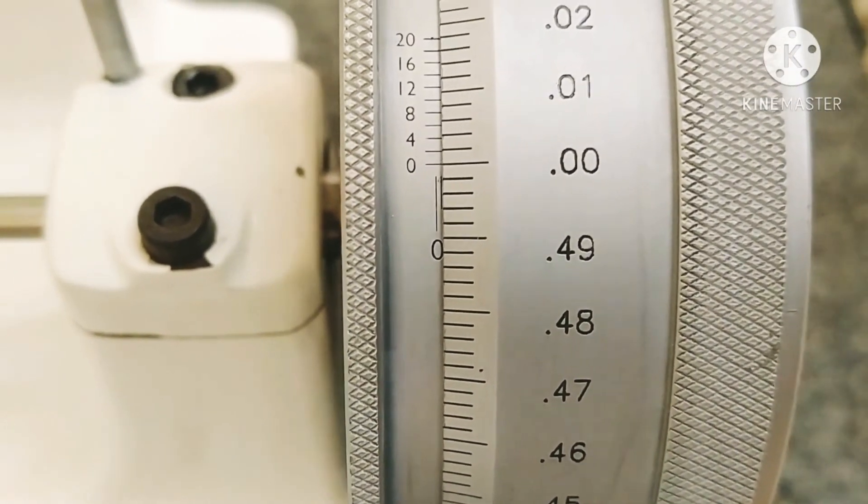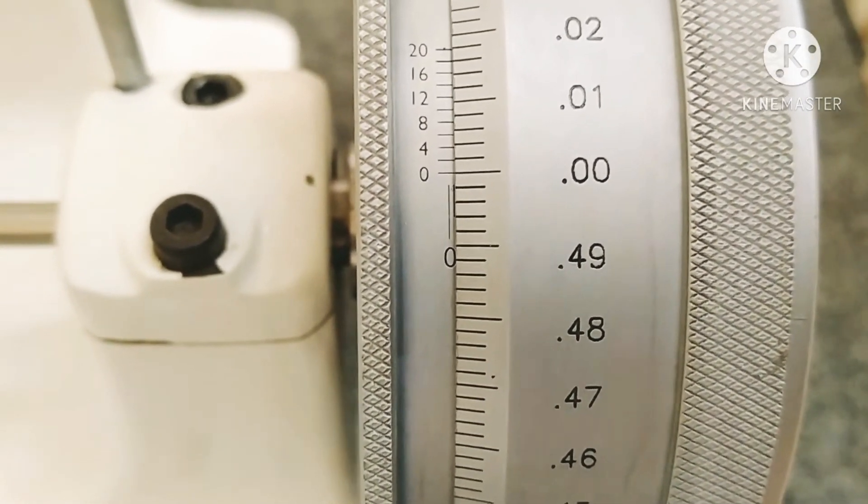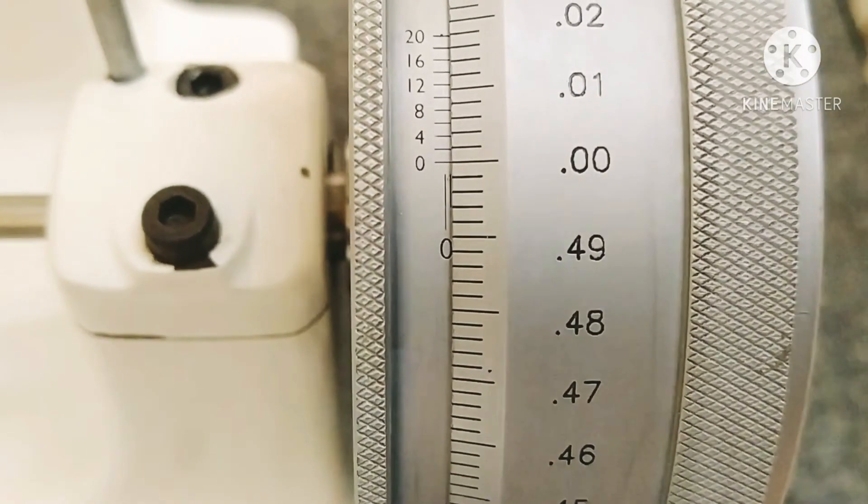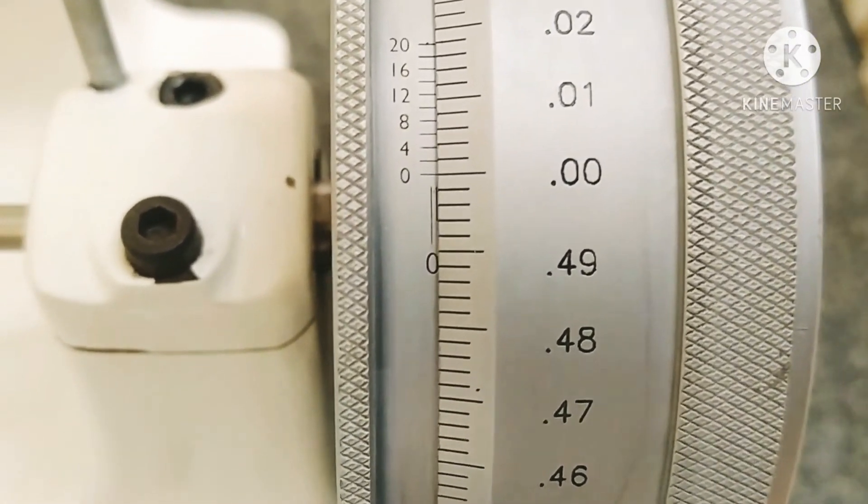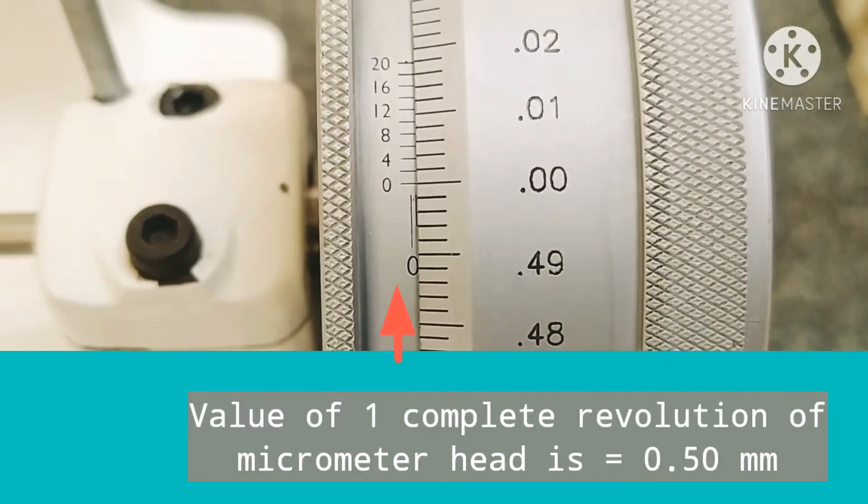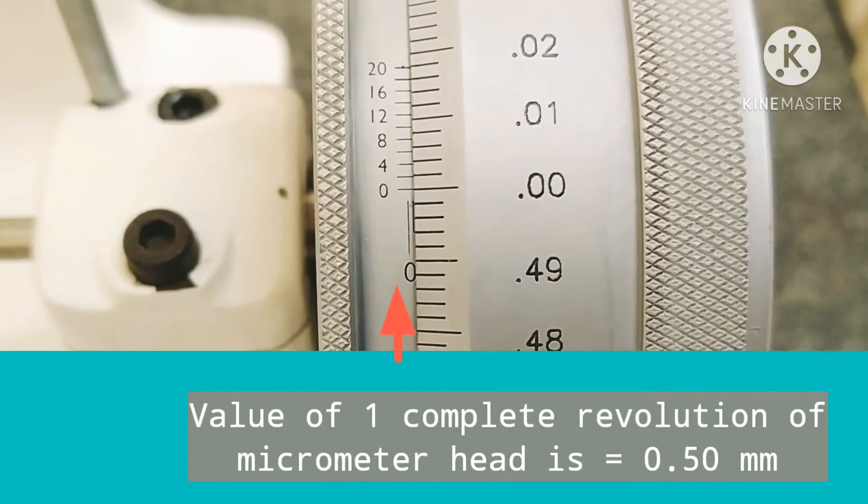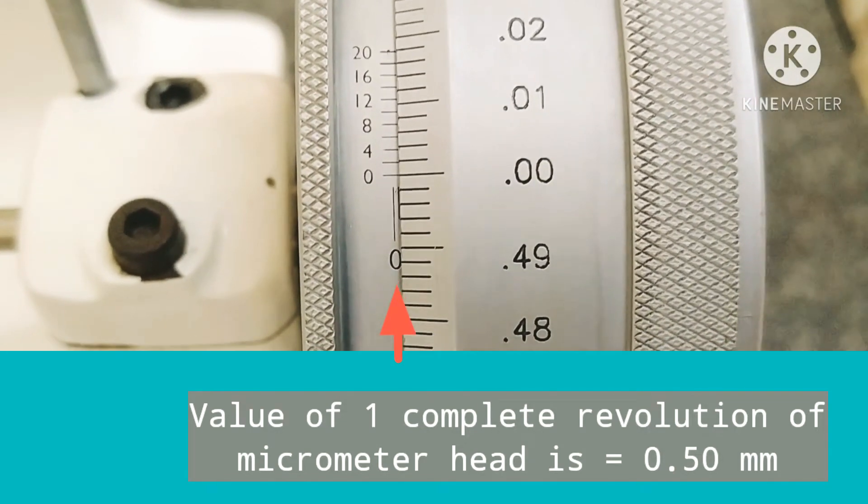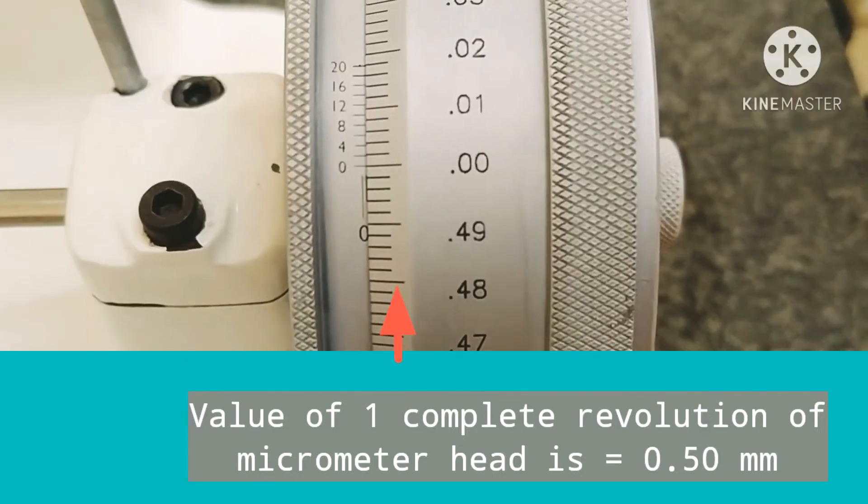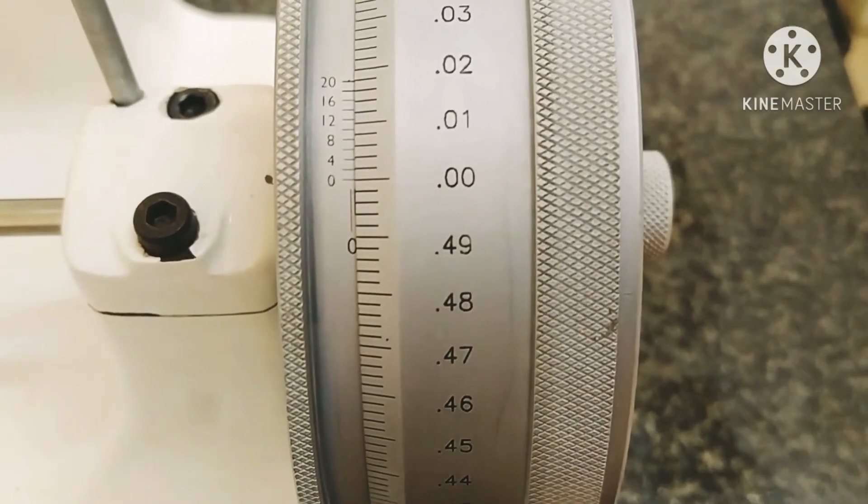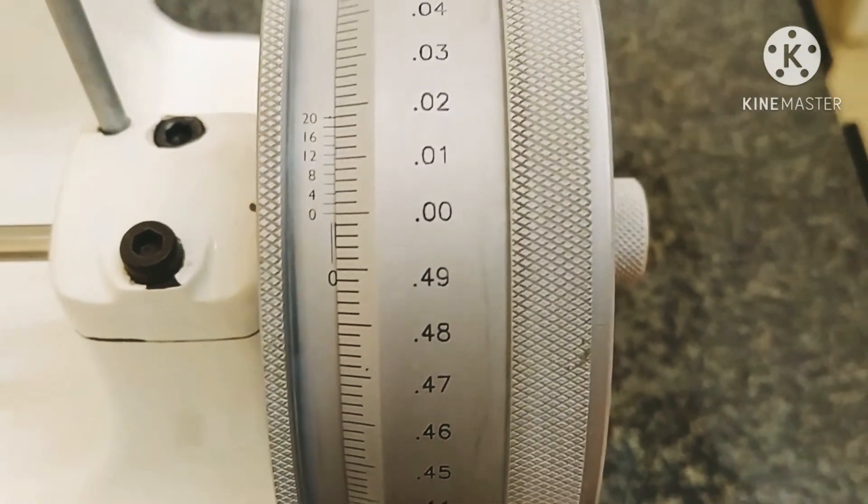The main scale shows 0.50 mm. That means 0.5 mm is the value of one complete revolution of the micrometer head, which equals 0.50 mm. As mentioned, there are total 50 points from 0.01 to 0.50.